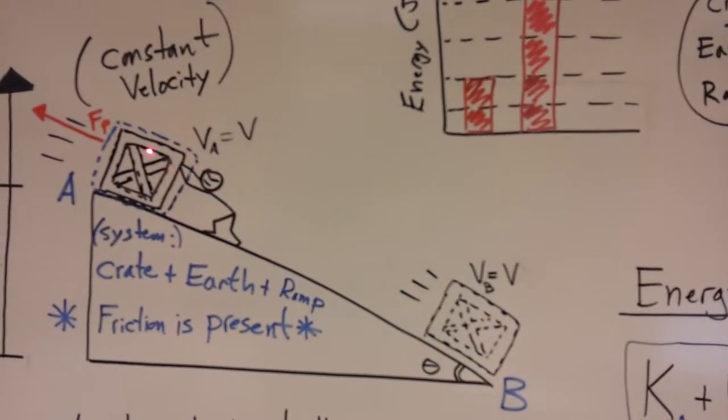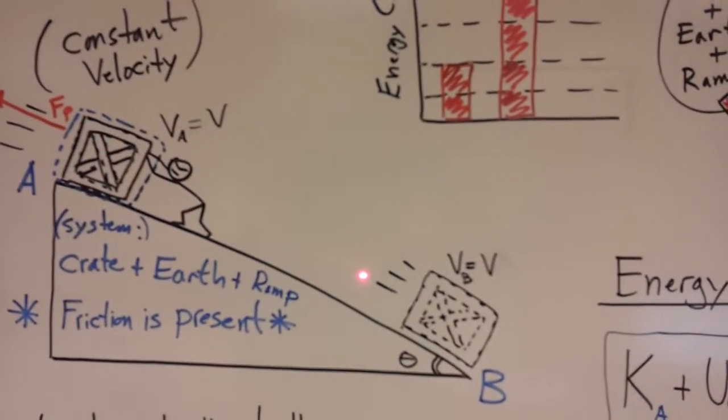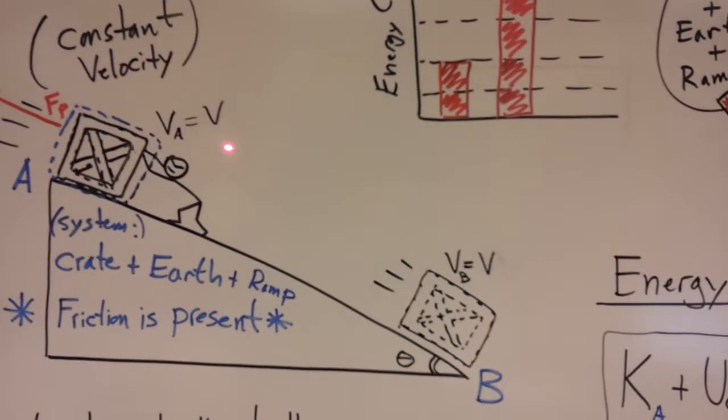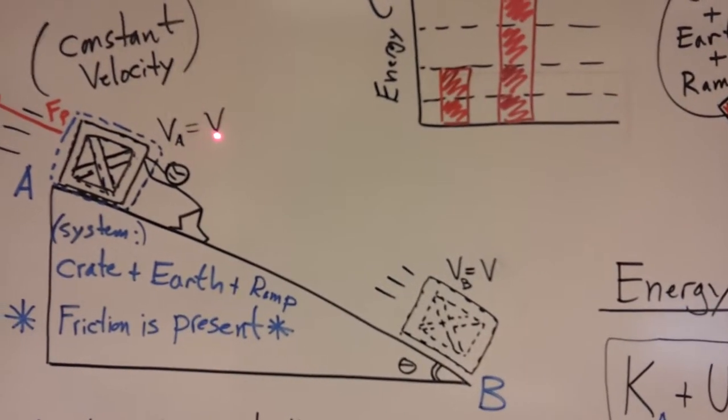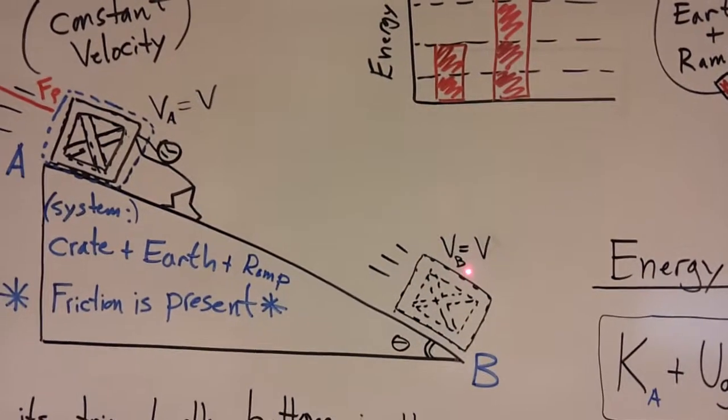there's somebody pushing back up on the box so it maintains a constant velocity as it slides down the incline. So the velocity at the beginning, or point A, we'll just call some general velocity V, is the same as the velocity that it has at the bottom.